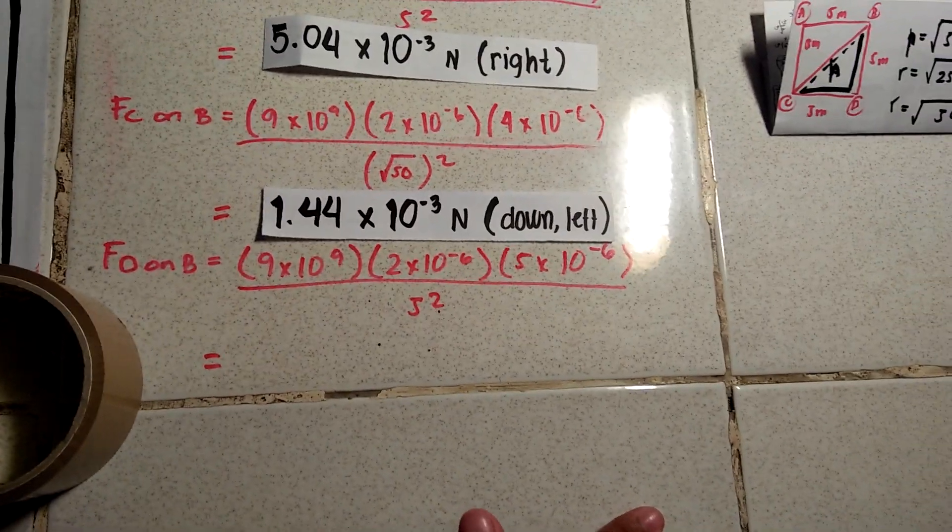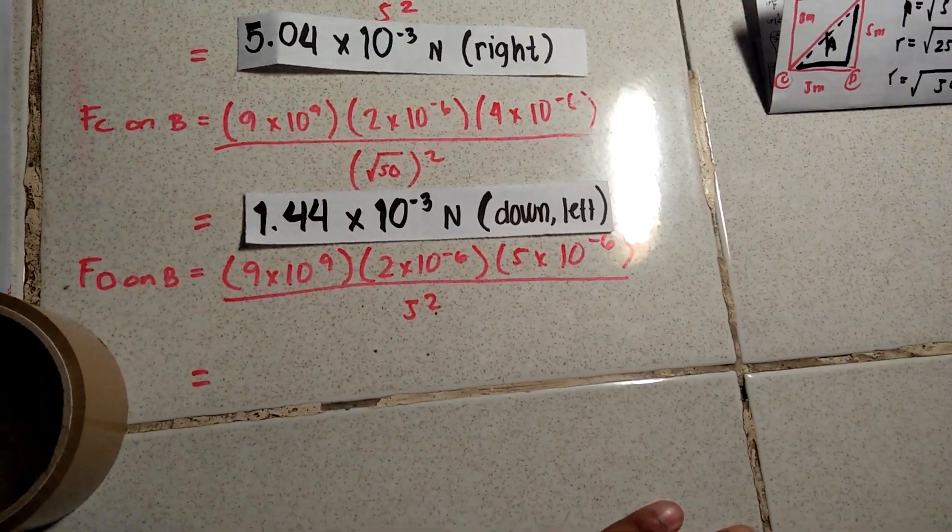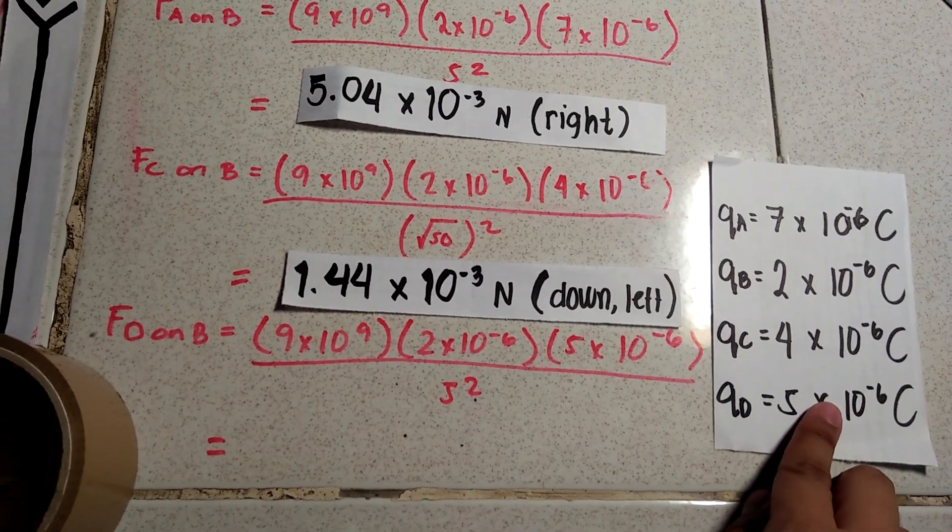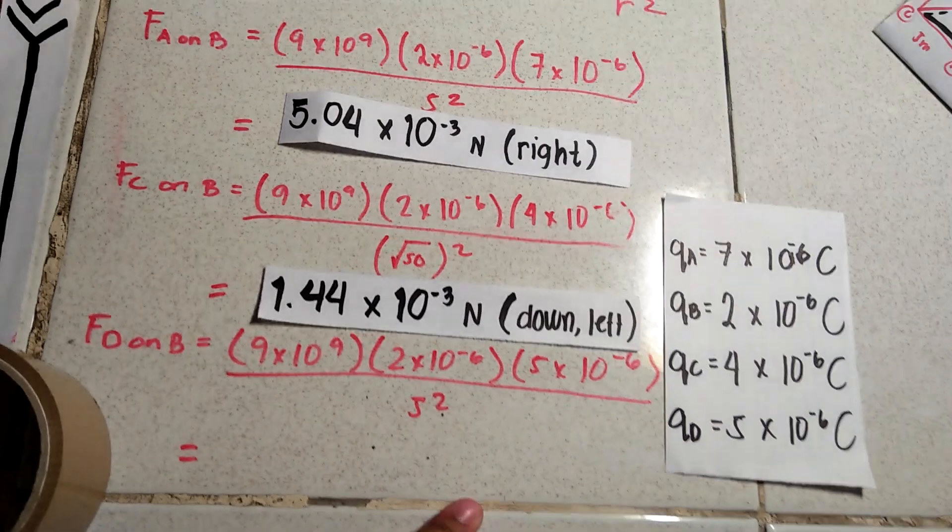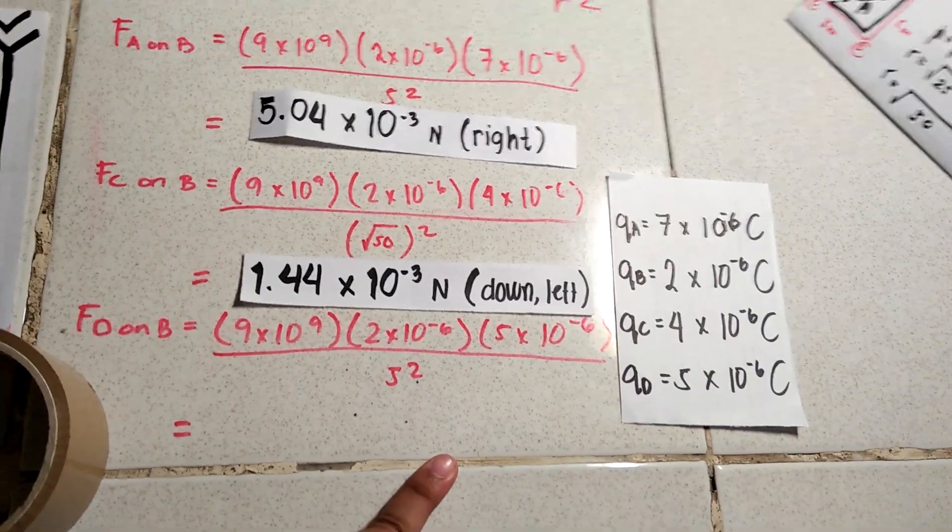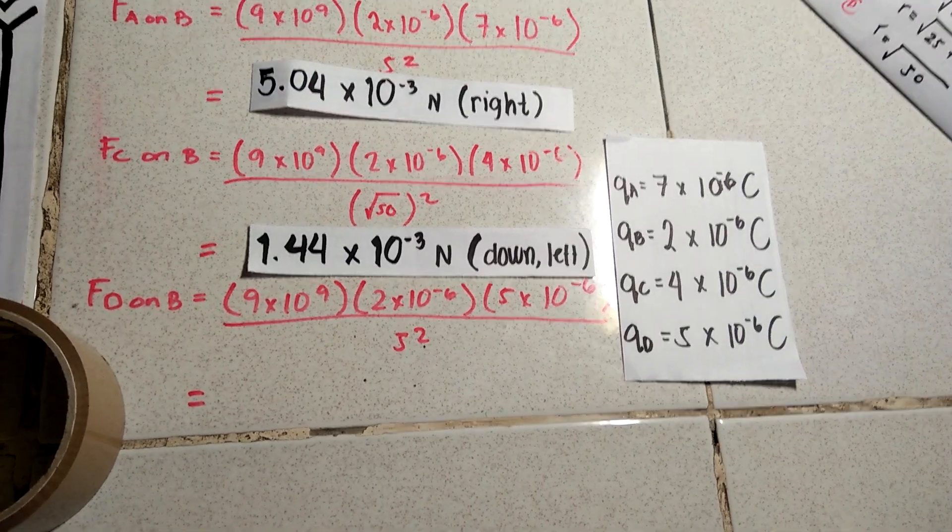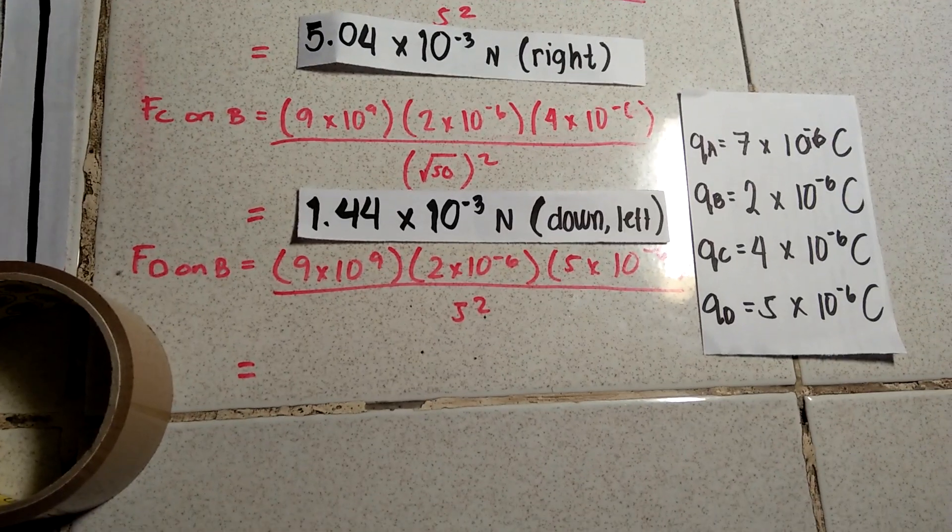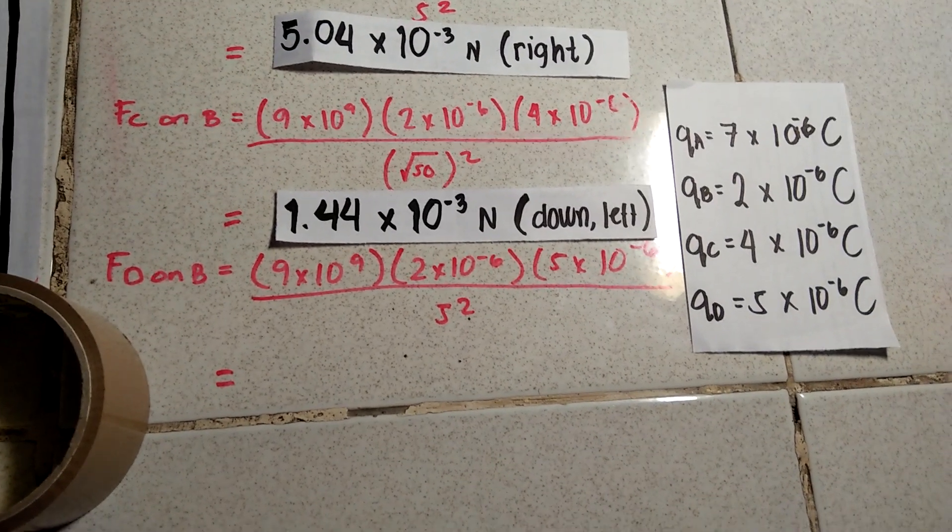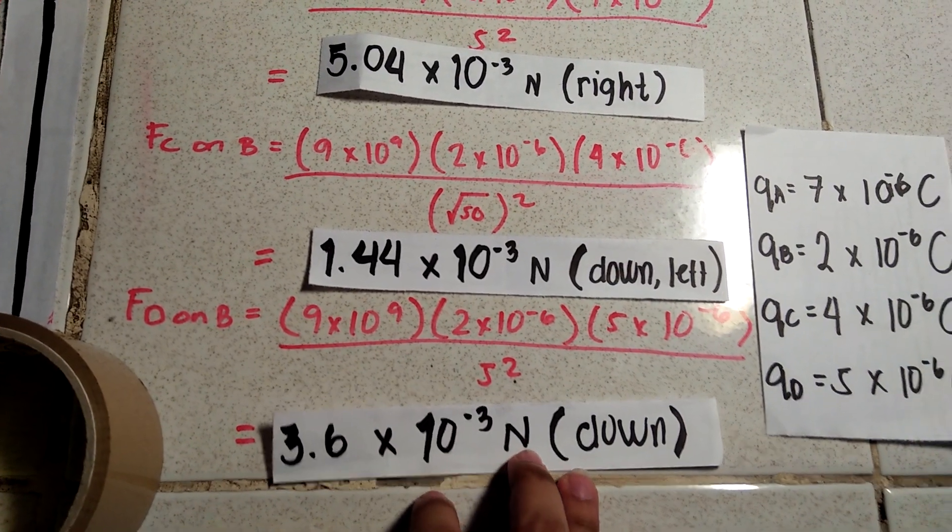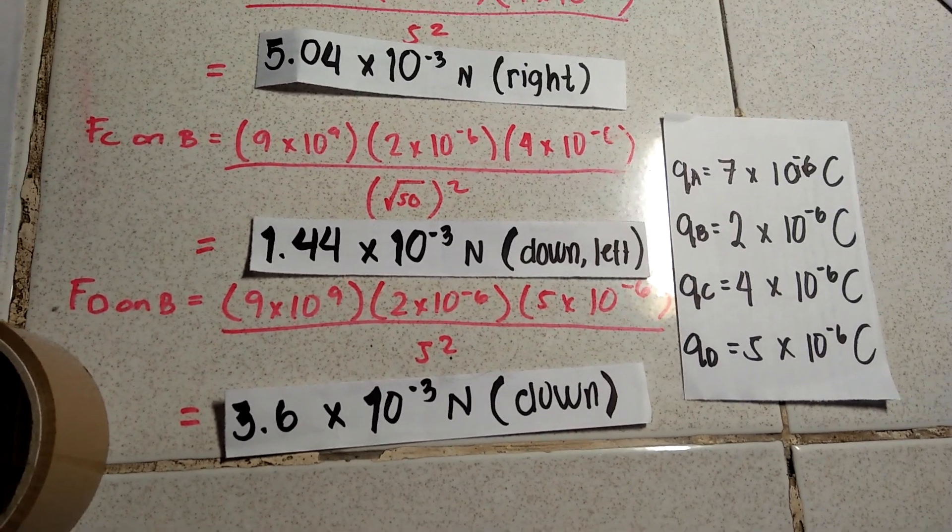So next is the force exerted by D on B. So values, values, values. So again, B is 2 times 10 to the power of negative 6. And D is 5 times 10 to the power of negative 6. If we do the math, this is the answer.